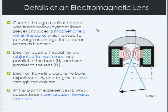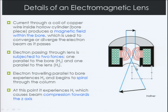How do these electromagnetic lenses actually work? We have a coil of copper wire inside a hollow cylinder called the pole piece. This produces a magnetic field within the bore. When we pass a current through the coiled wire, it produces a magnetic field inside. This will converge or diverge the beam as it passes. The electrons are subjected to two forces — one parallel to the bore and one parallel to the lens. The net result is that electrons spiral in tighter and tighter, then spiral out and get larger. This is like an example of the condenser lens; for the objective lens, it's the opposite effect, starting wider and ending with a narrower beam.